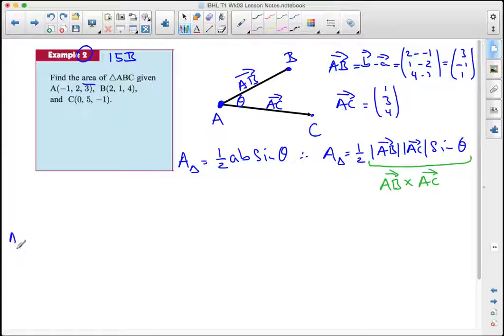So finding the vector product of AB and AC, that's working out the determinant of a 3 by 3 matrix and AB goes in the middle here, 3, negative 1, 1 and AC goes at the bottom, 1, 3, 4 and the top row is I, J and K, the components of our resulting vector.